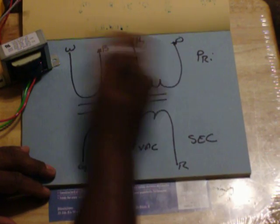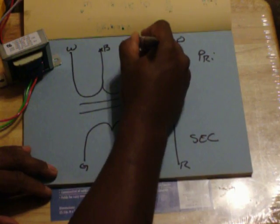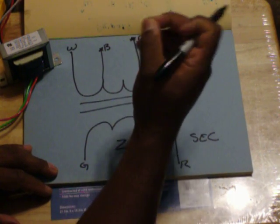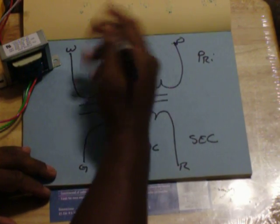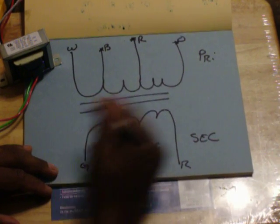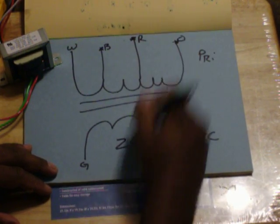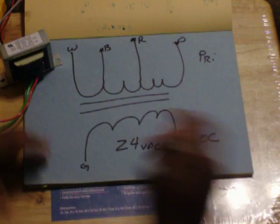So no matter what, you're going to use white. Whatever you don't use, you cap them off. Do not hook them together. Cap them off. If you hook them together, you're going to short it out. But no matter what voltage you hook up, you're always going to come out with 24 volts.